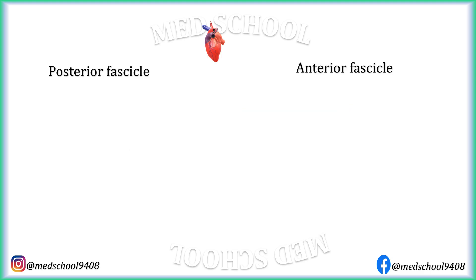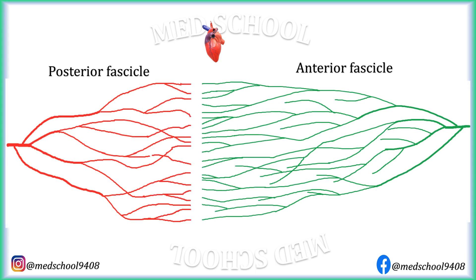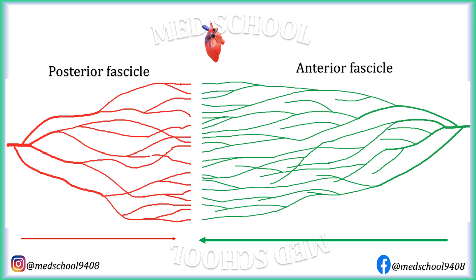There are two more important concepts you should remember to understand fascicular blocks better. First, the posterior fascicle is shorter and conducts impulse to a lesser amount of musculature. Hence, the vector of activation through the posterior fascicle has a smaller magnitude than the vector of activation through the anterior fascicle. Second, these two fascicles anastomose — that is, make connections with each other at their distal ends.